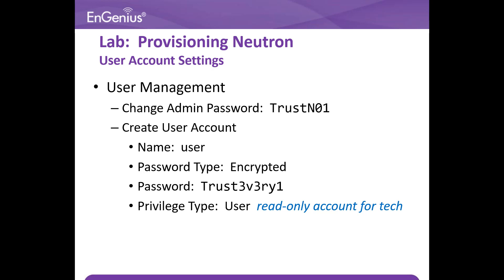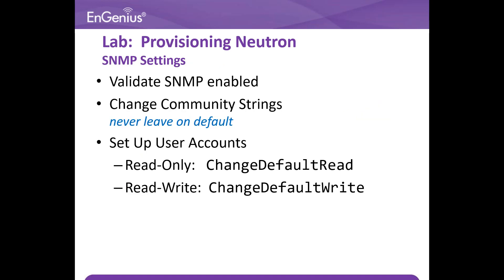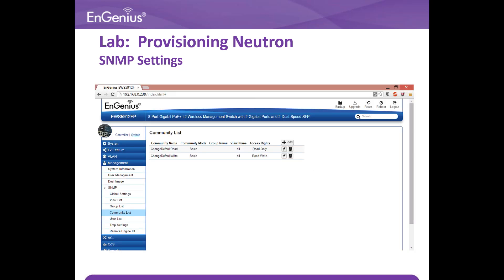Change the admin password and create user account as shown. This is the user management page to make the changes and to create account. Make changes to the SNMP by changing the read-only and read-write accounts. The SNMP community list changes can be done on the switch option under management community list as shown in the slide.